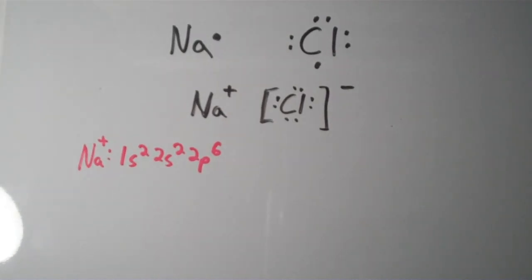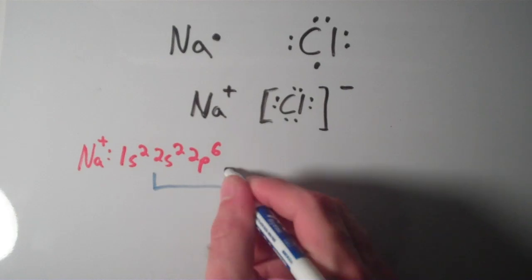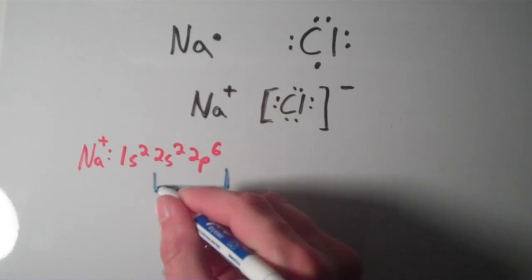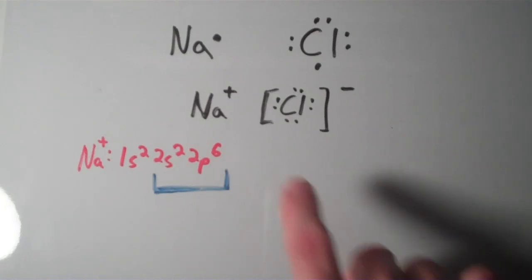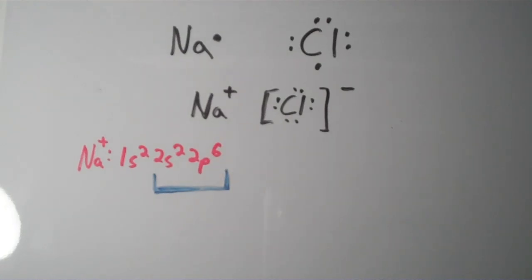So, now the n equals 2 shell is the valence shell. And notice that we have 6 plus 2, or 8 electrons in that outermost shell now, now that we've ionized this sodium. So, there is an octet here, even though it's not shown in the formula for the compound.